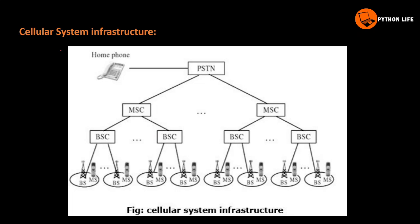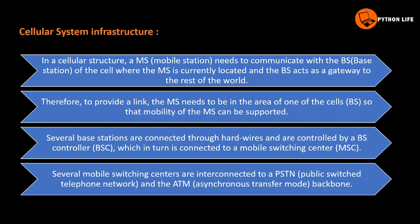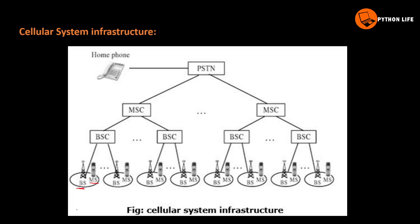Next is the cellular infrastructure. First, BS is base station, MS is mobile station, BSC means base station controller — BSC controls the base stations. MSC means mobile switching center, and two BSCs communicate to the MSC. MSC connects to the PSTN, so you can connect to other phone networks.